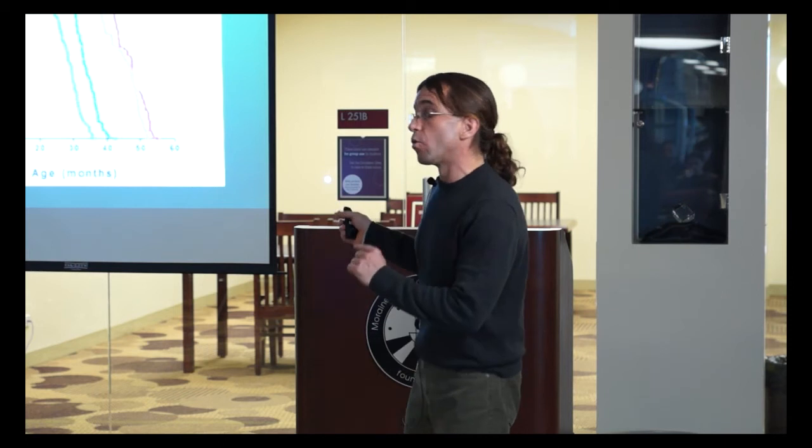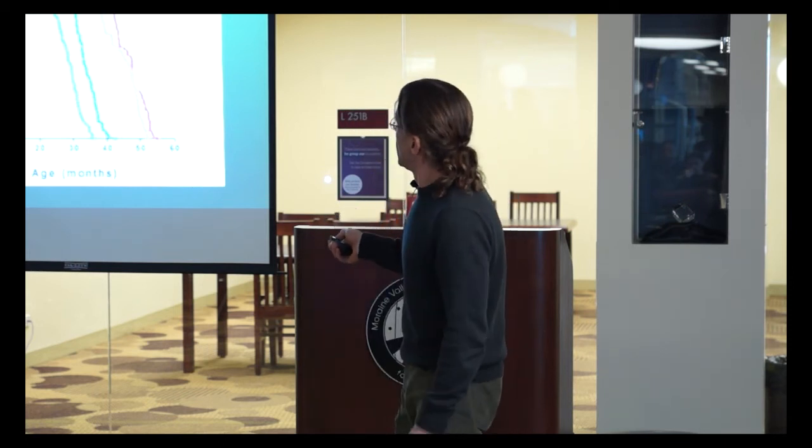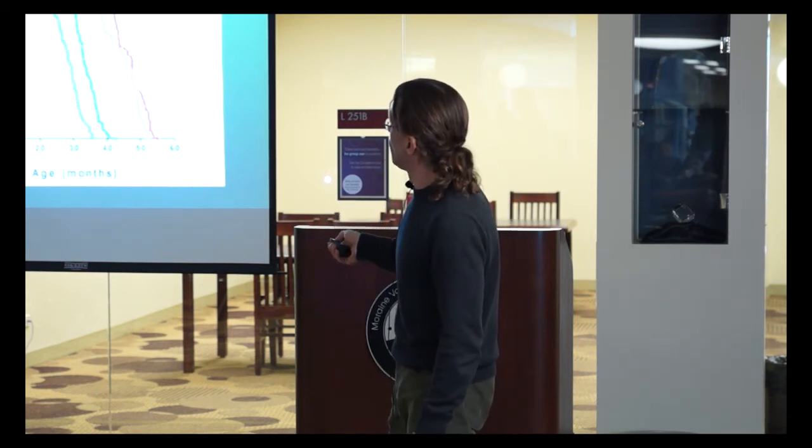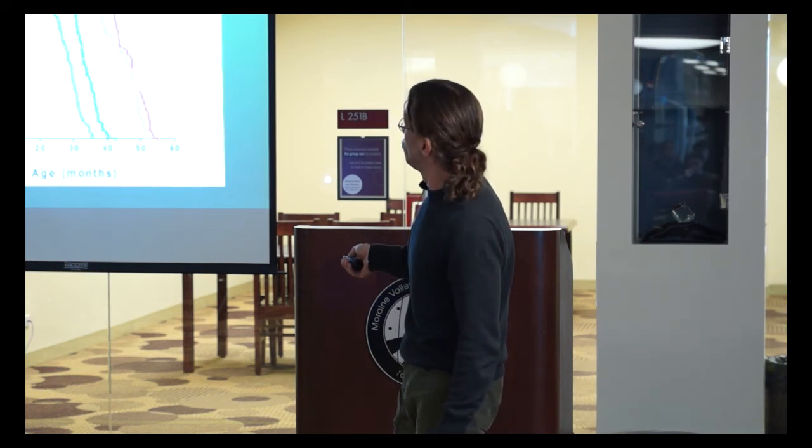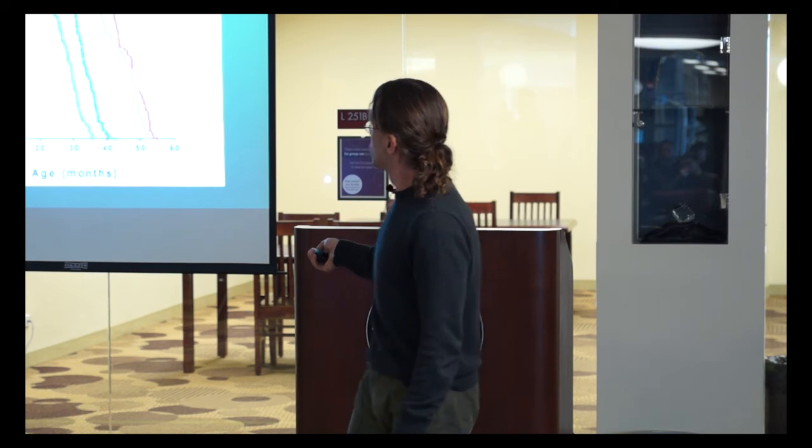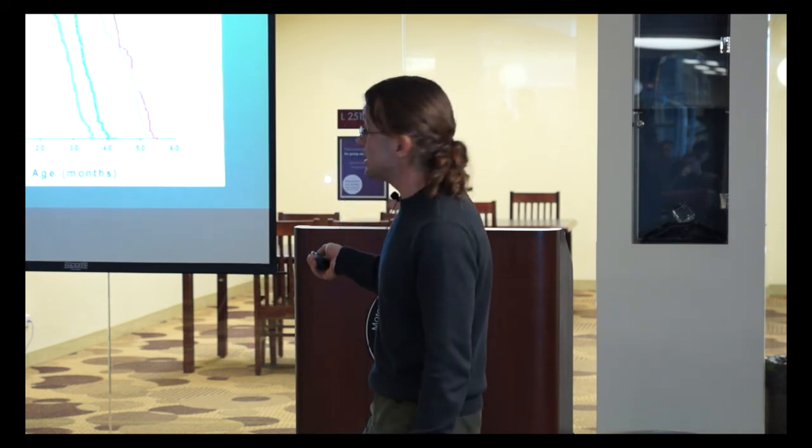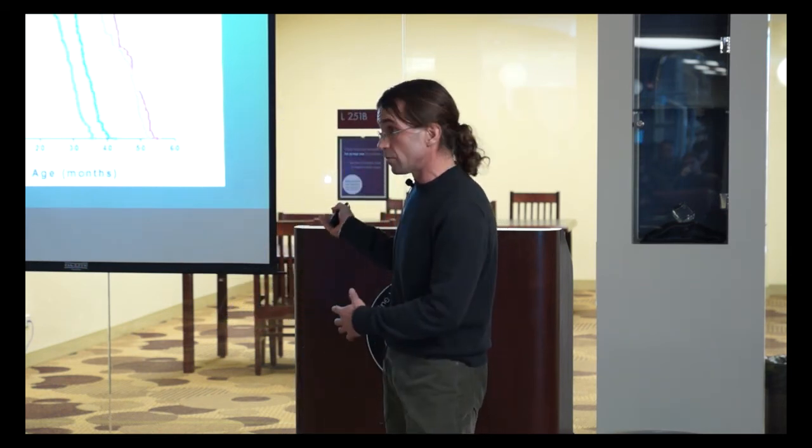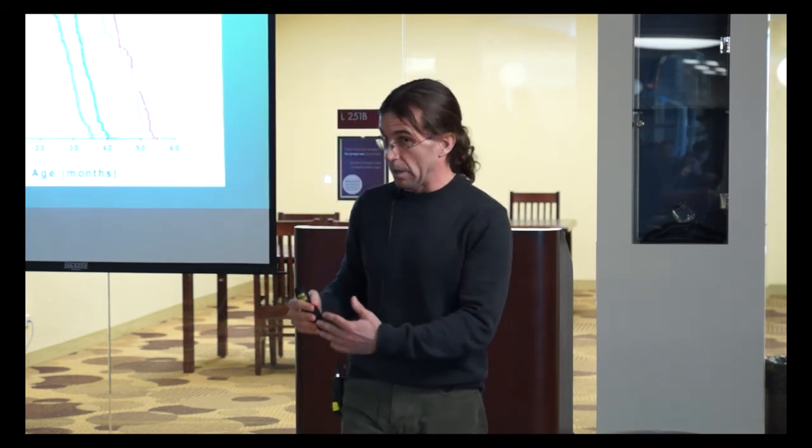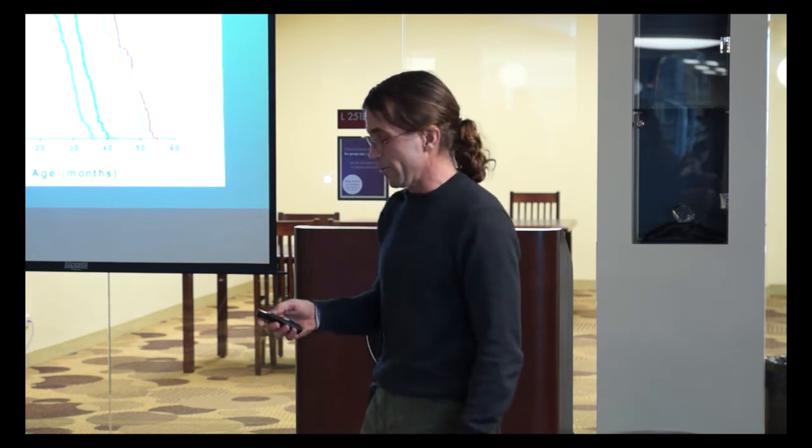Here we see some research about caloric restriction. The green mice were fully fed and they lived around 30 months. As we reduce the calories all the way up to 65% shown in red, we see that the mice lived considerably longer, almost up to 50 months. So basically the data is very clear. The less the mice ate, the longer they lived. Now this is not humans of course, but it probably applies to a certain degree to humans as well as other mammals.